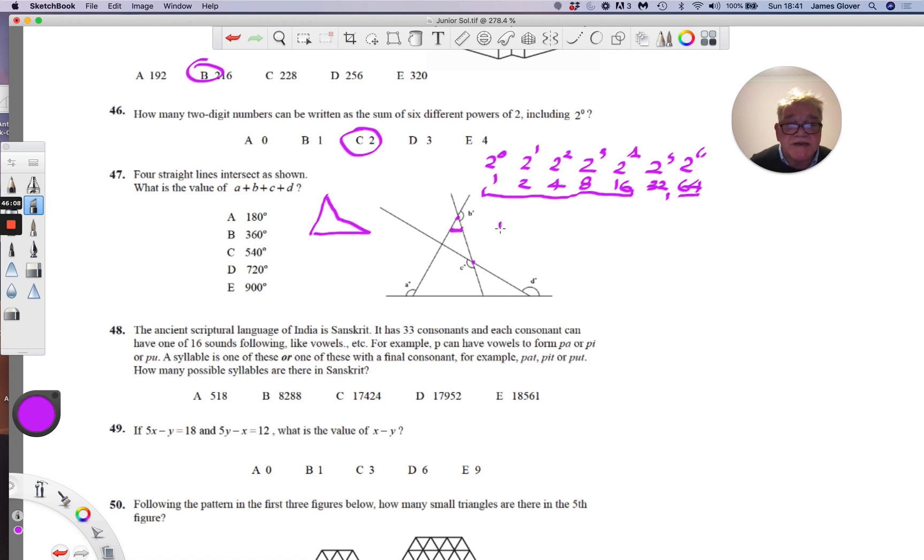So this angle here is 180 take away B. This angle here is 180 take away A, so plus 180 take away A. This angle here is 180 take away D. Now what about this angle round here, this angle C here, this angle is 180 take away C. So we've got plus 180 take away C. And then this angle round here is 180, so plus 180.